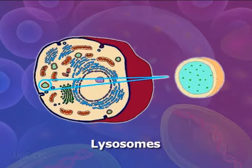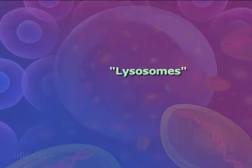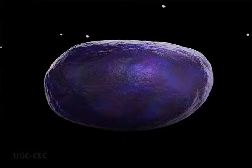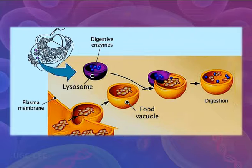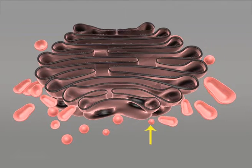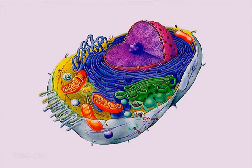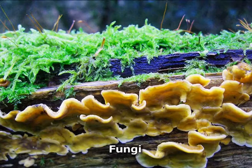Lysosomes are small spherical organelles that enclose hydrolytic enzymes within a single membrane, first identified by Christian de Duve. They are the site of protein digestion, allowing enzymes to be recycled when no longer required, and are also the site of food digestion within cells. Lysosomes are formed from pieces of the Golgi apparatus that break off and are common in animal, protoctista, and fungal cells, but rare in plants. Absence or malfunction of lysosomes results in lysosomal storage diseases, where molecules accumulate inside lysosomes and swell, crowding other organelles.